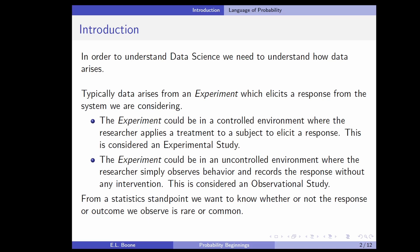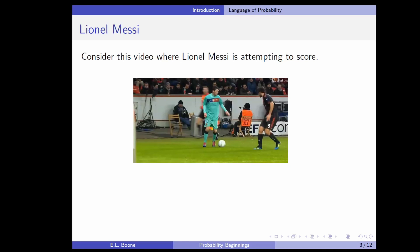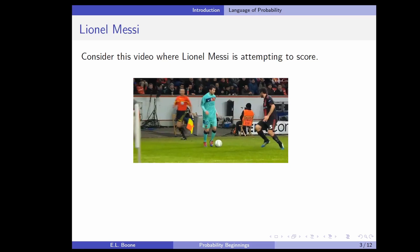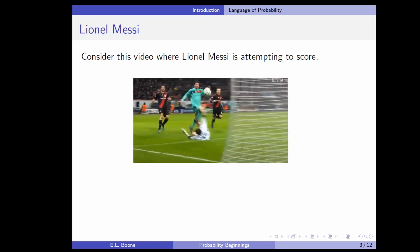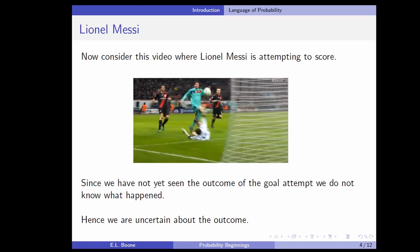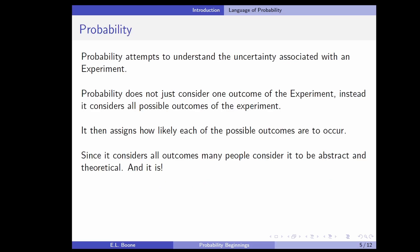Let's consider some simple examples to make this easy to understand before we get into the heavy math later. Let's watch this video where Lionel Messi is attempting to score a goal. Notice that I stopped it right before he either scored or didn't. Since we haven't seen the outcome yet, we don't know what happens — and hence, we're uncertain about the outcome. This is the idea of probability: we don't want to just think about one thing, we want to think about what all could have occurred. Probability attempts to understand the uncertainty associated with an experiment.